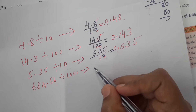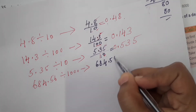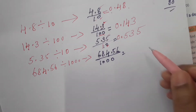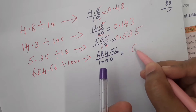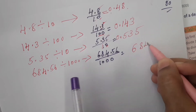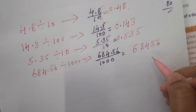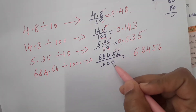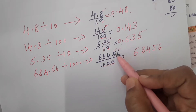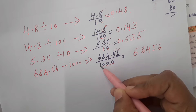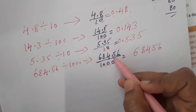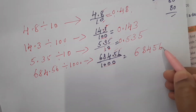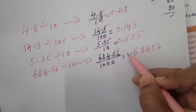Next: 684.56 divided by 1000. Write the numerator as 68456 (ignoring the decimal point). After the decimal point there are 2 numbers, and divisor 1000 has 3 zeros. Total count: 1, 2, 3, 4, 5 — so after 5 digits from the right, place the decimal point. The answer is 0.68456.